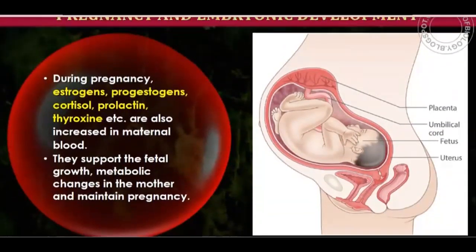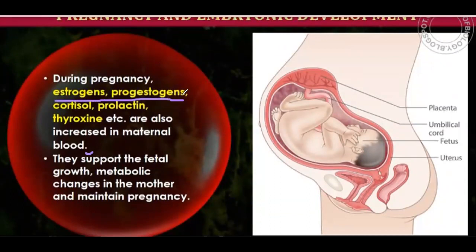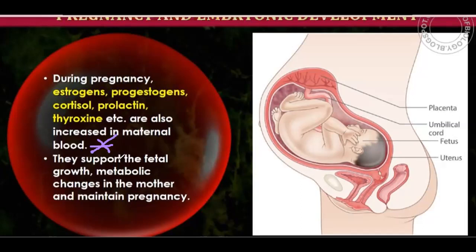During pregnancy, hormones such as estrogen, progesterone, cortisol, prolactin, and thyroxine increase in maternal blood. Estrogen and progesterone increase because they maintain the pregnancy. These hormones support fetal growth, drive metabolic changes in the mother, and maintain the pregnancy.